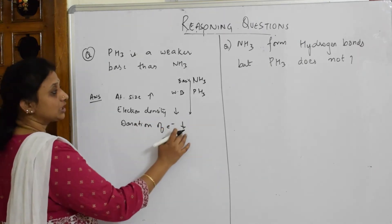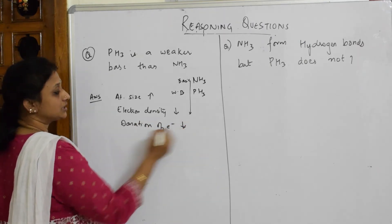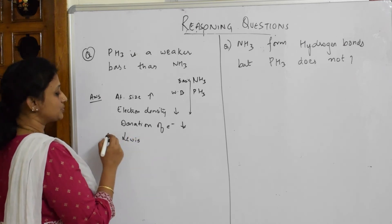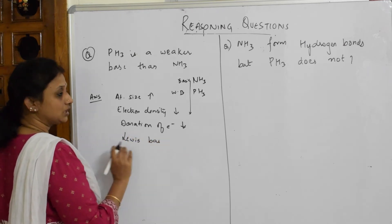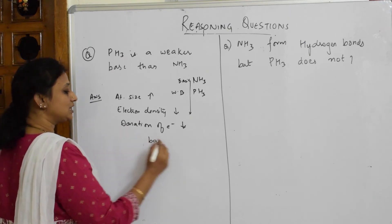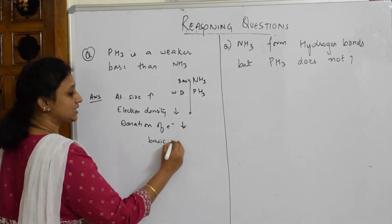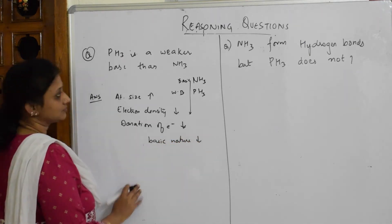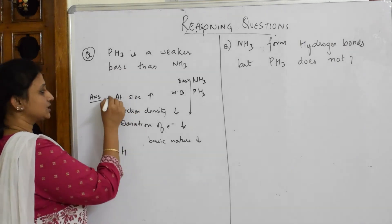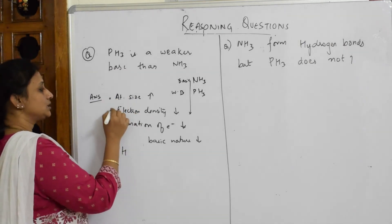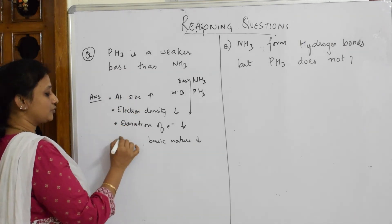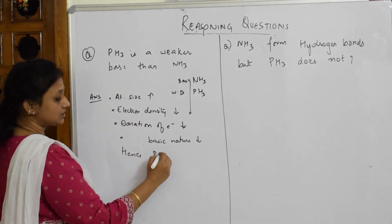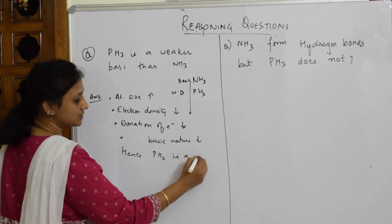When the electron cloud around the central metal atom decreases, what will happen to its donating capacity? Donation of electrons decreases. When electron donation decreases, the basic nature — in terms of the Lewis base concept — reduces. Hence PH₃ is a weak base.